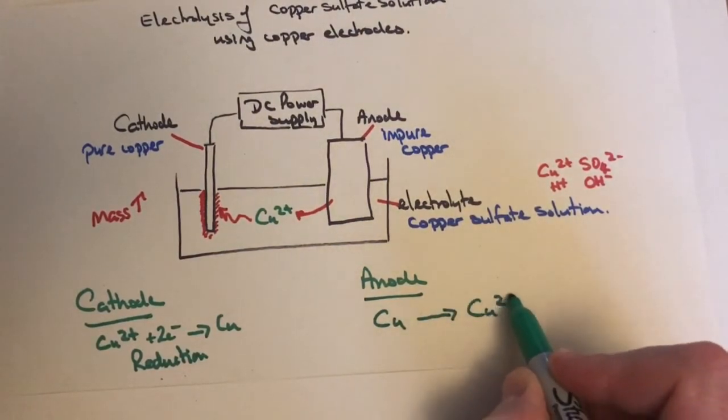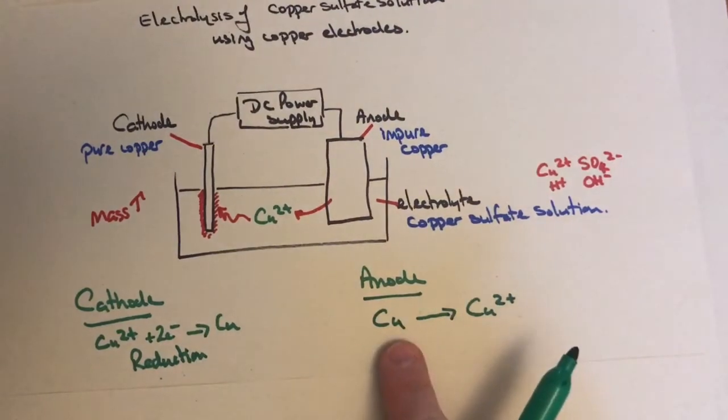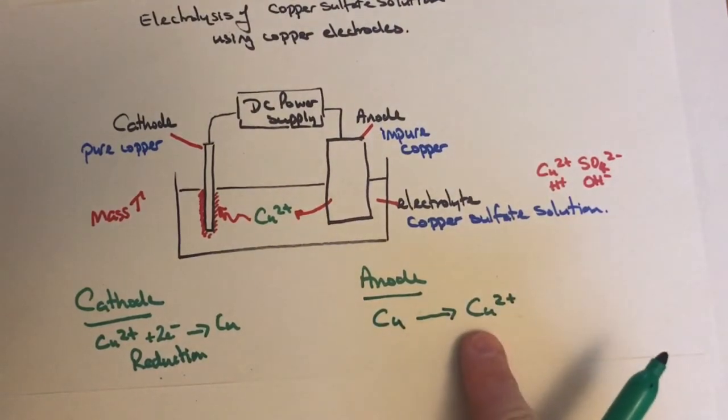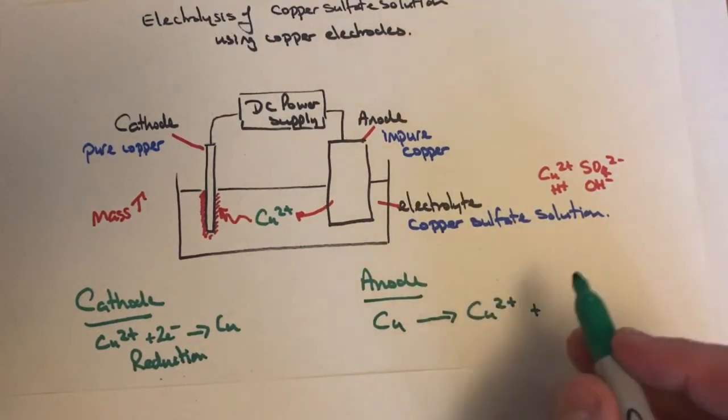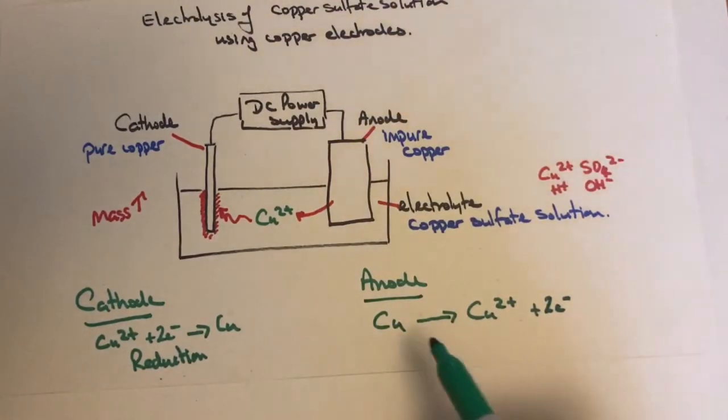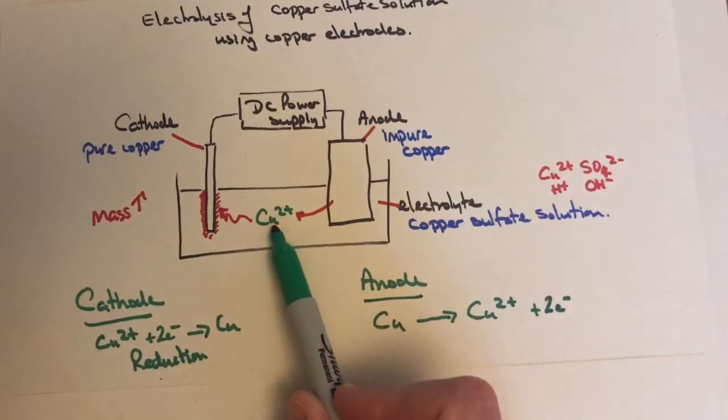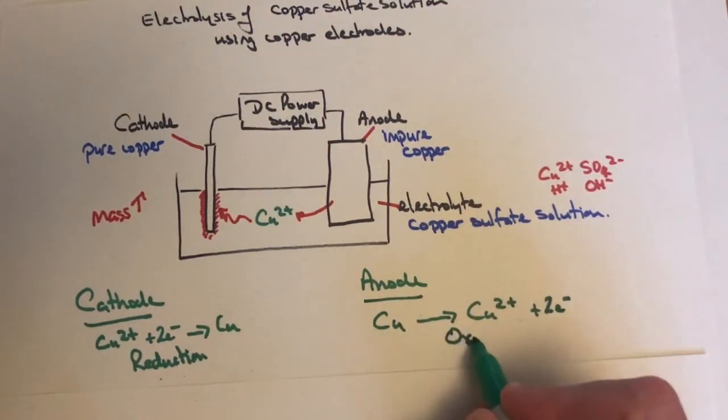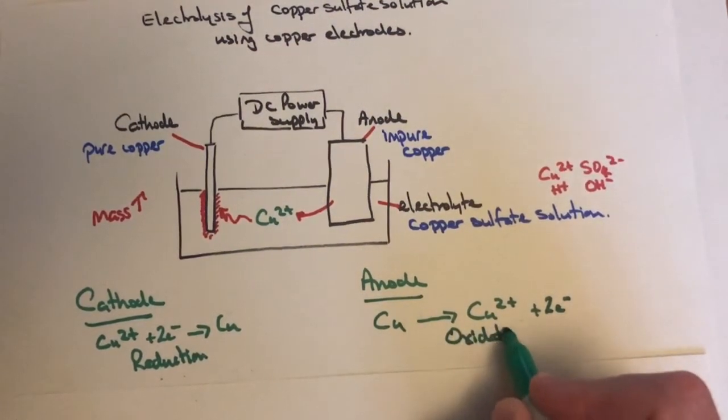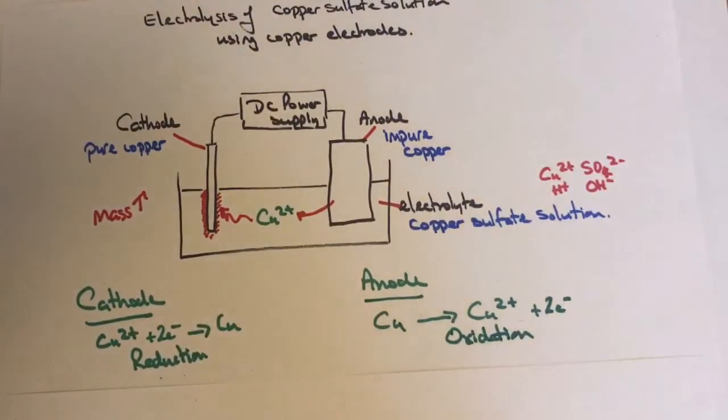To go from no charge to positive (2+), copper metal must lose two electrons. The copper breaks down to copper ions which go into the electrolyte. Because this involves losing electrons, this is oxidation—oxidation is loss of electrons.